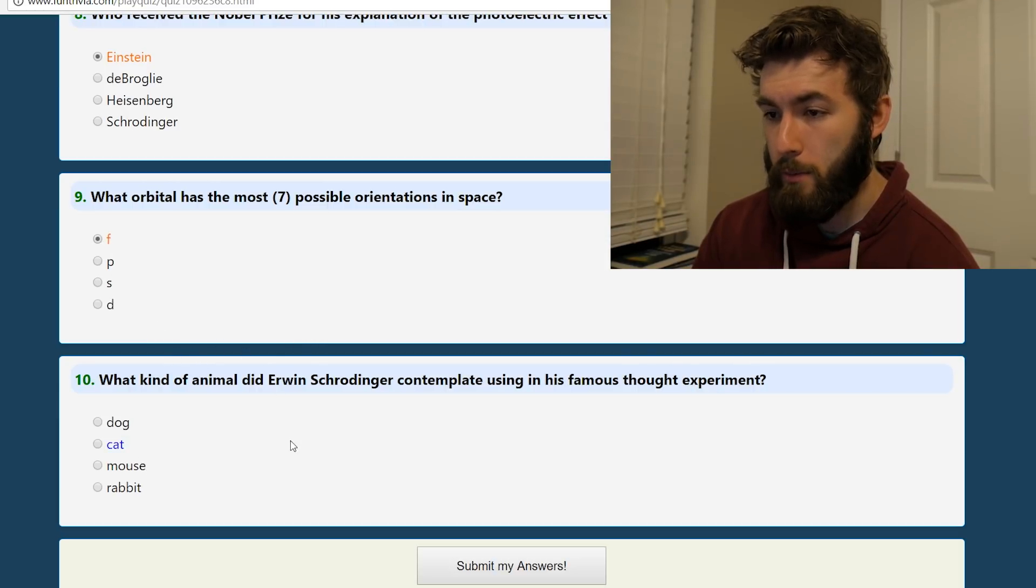What kind of animal did Schrodinger contemplate? That's a mouse. No, that would be cat.